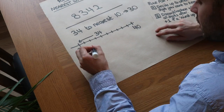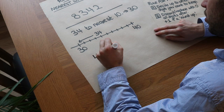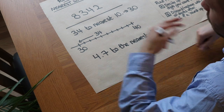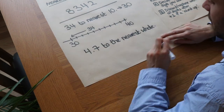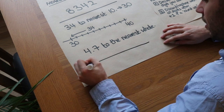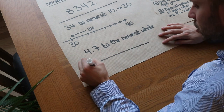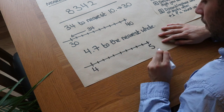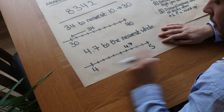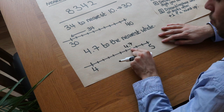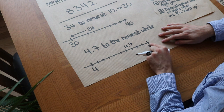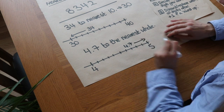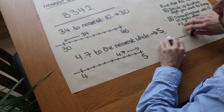What about rounding 4.7 to the nearest whole? Whole numbers are numbers like 1, 2, 3, 4, 5 - where there's nothing after the decimal point. Using the same strategy, the nearest whole numbers either side are 4 just below and 5 just above. Placing 4.7 on the number line - 4.1, 4.2, 4.3, 4.5, 4.6, 4.7, 4.8, 4.9, 5 - we can see the nearest whole number is five.